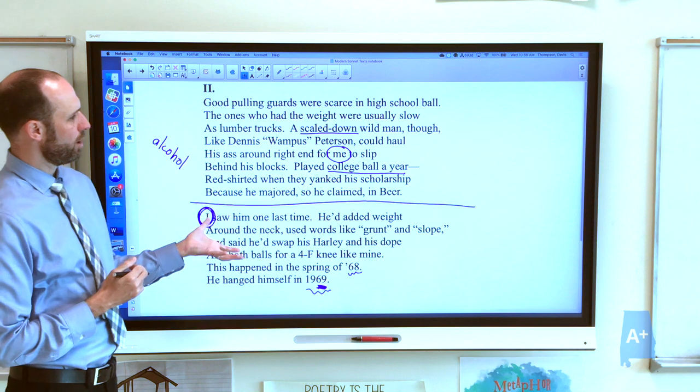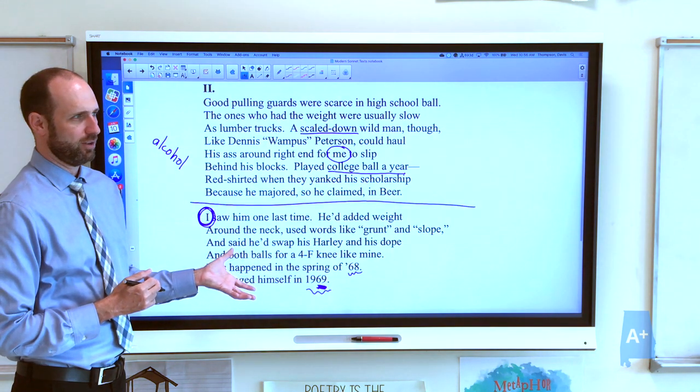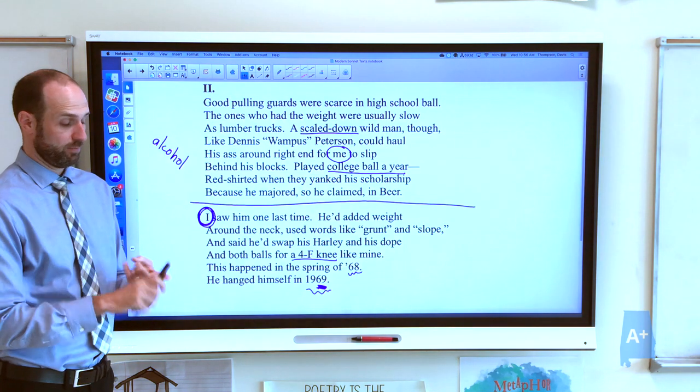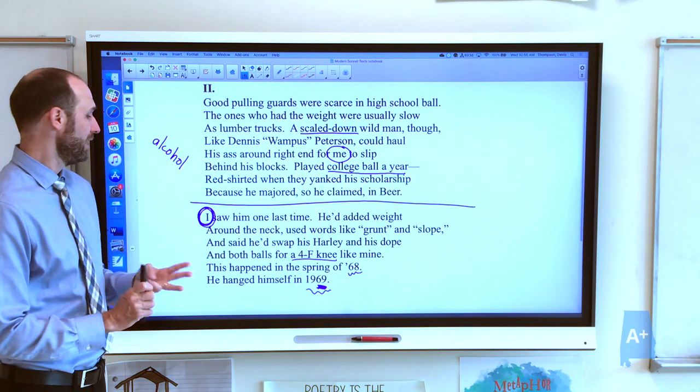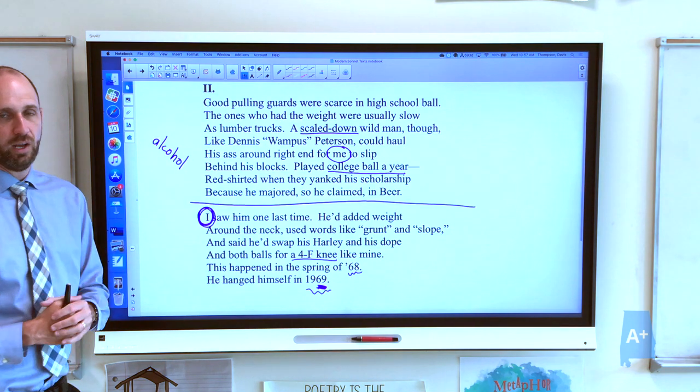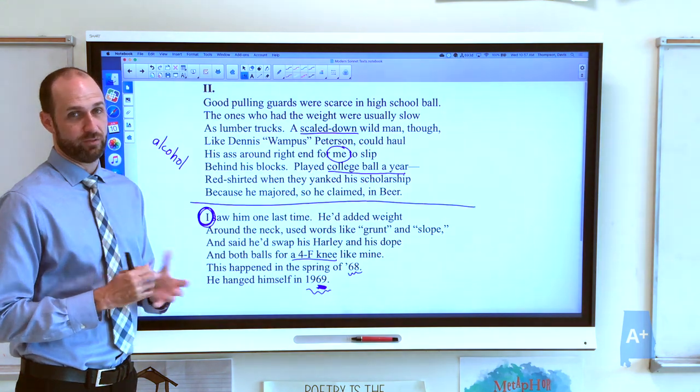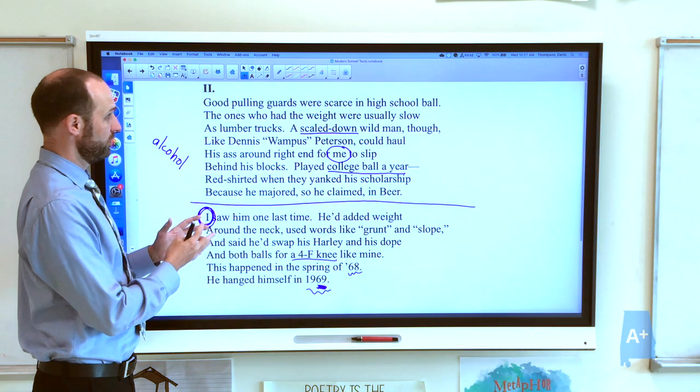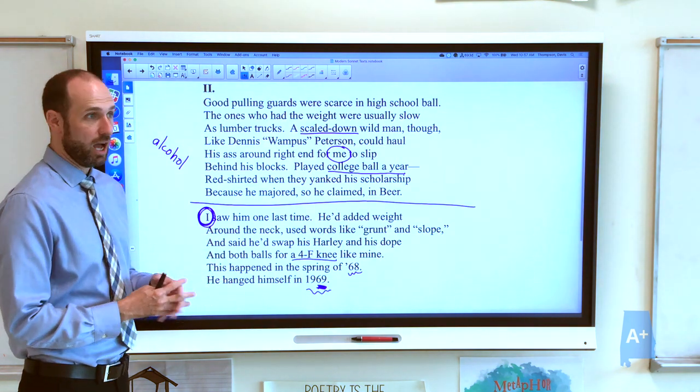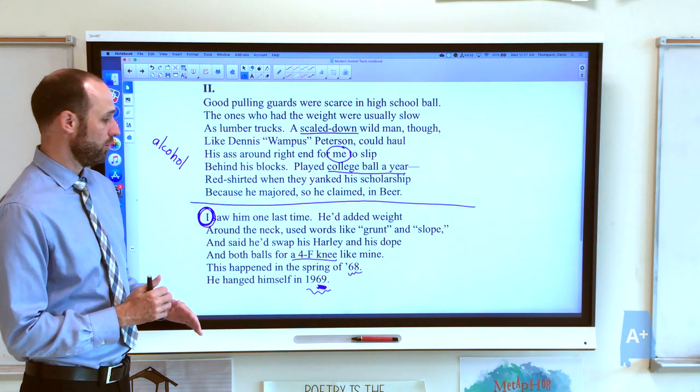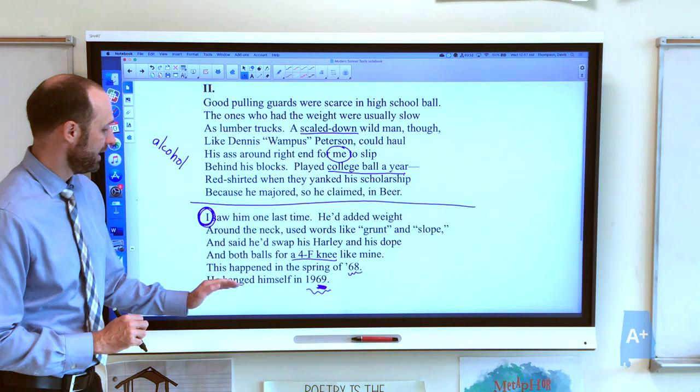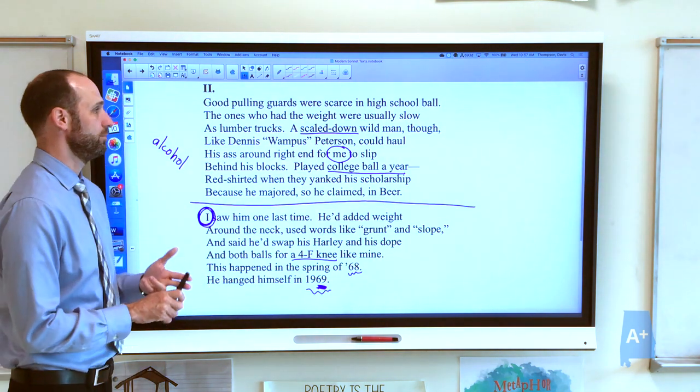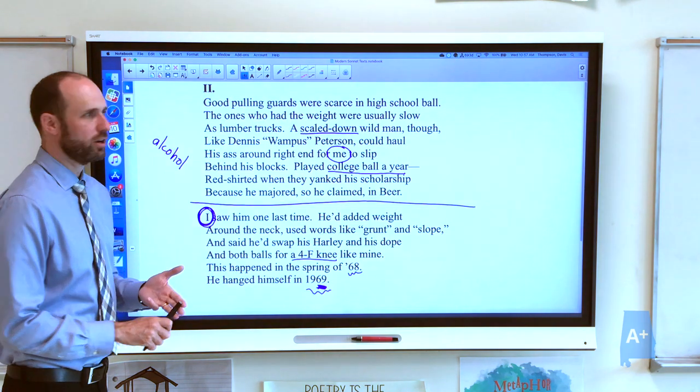And when our football player meets our narrator, he is obviously jealous of our narrator in some ways. Our narrator has a 4-F knee. And Dennis Wampus Peterson said he'd swap his Harley and his dope and both balls, his motorcycle, his marijuana, and both of his balls for a 4-F knee like mine. He uses sort of rough masculine language. What is a 4-F knee? A 4-F knee is a classification that gets you out of the draft. So our narrator has been given an exemption from the draft of the Vietnam War. And whatever Dennis Wampus Peterson experienced or saw there, he's not doing well. He would have given anything not to have been drafted, to have an exemption from it. And if nothing else, we know this because our narrator talked to him in the spring of 68, and he hanged himself in 1969. So we have a baseball player thief who blew himself up, and we have an alcoholic, drug-addicted football player who hangs himself.